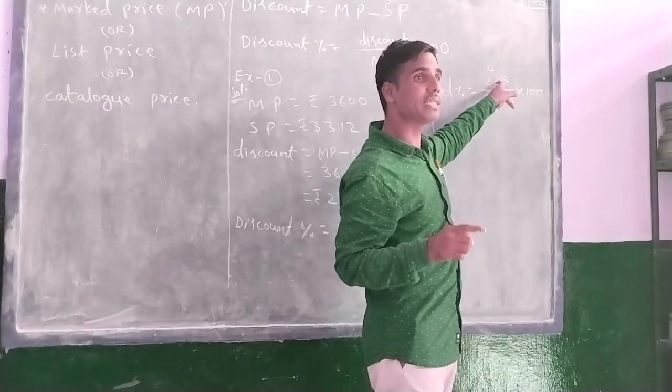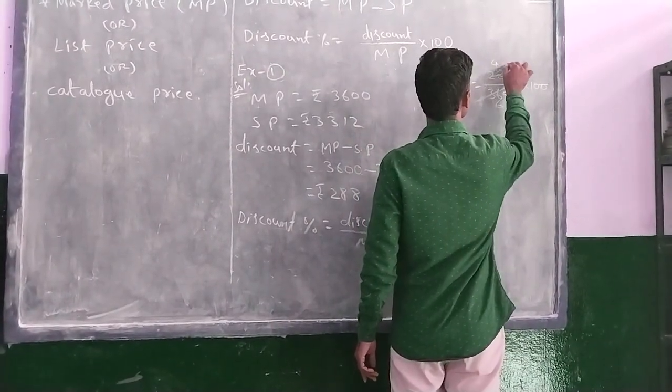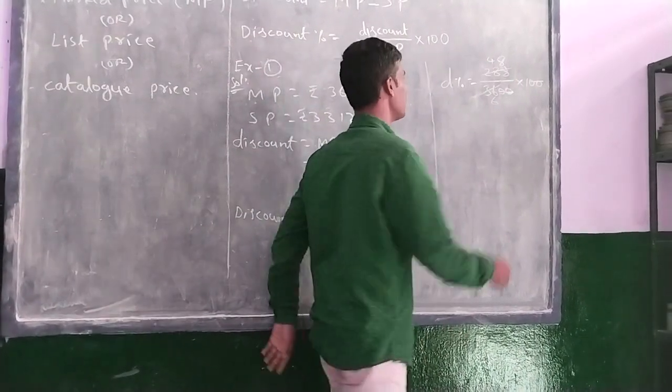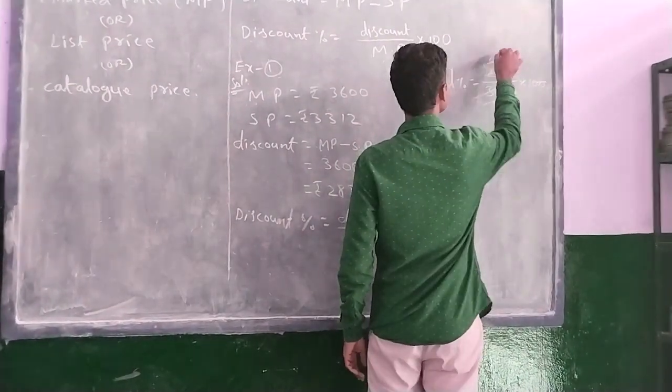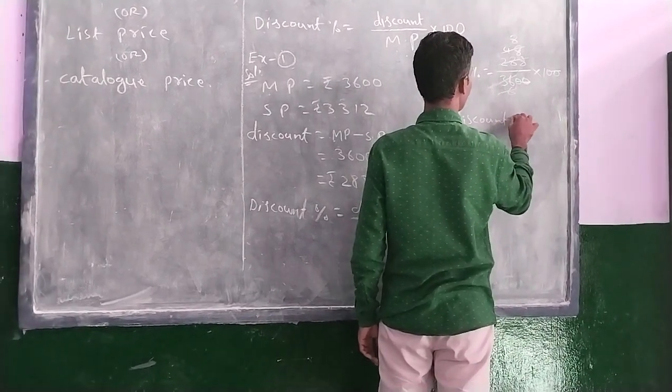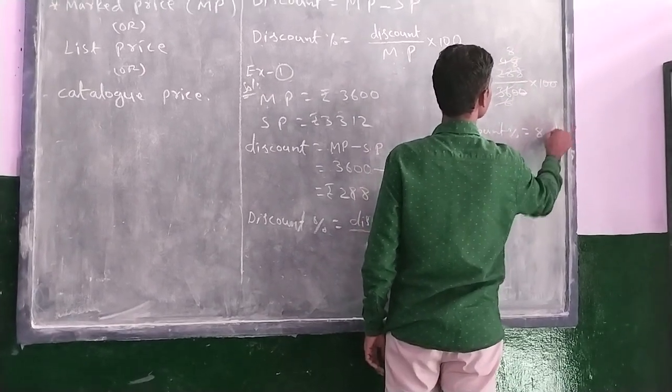6, 8 are 48. Again here, 6 table, 48 will come. 6, 8 are 48. Now, discount percent equal to 8 percent.